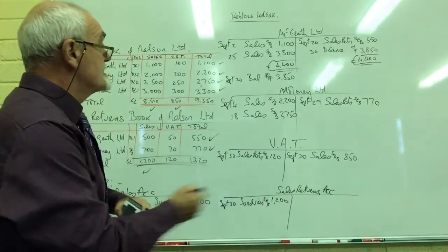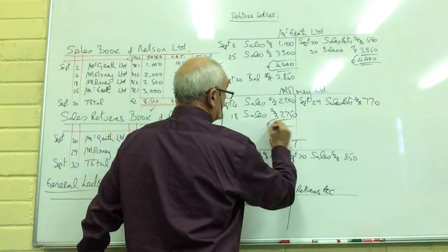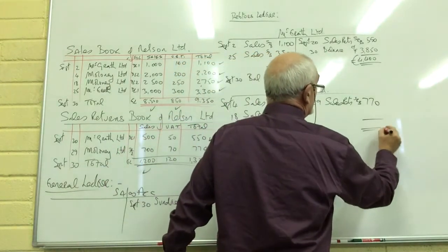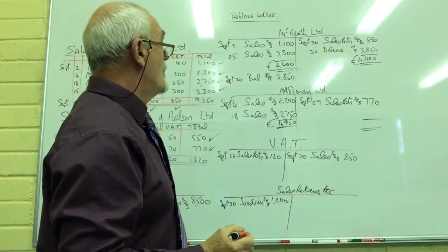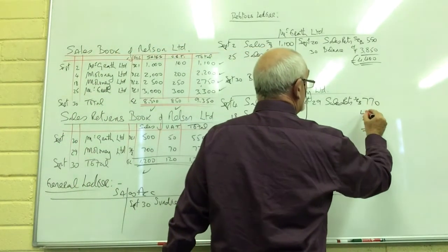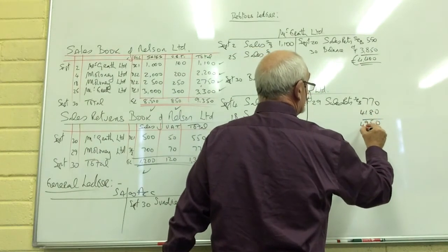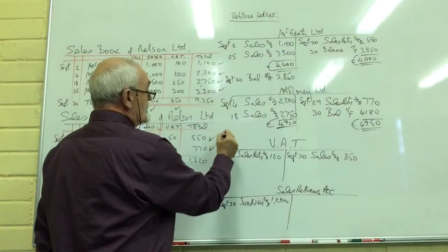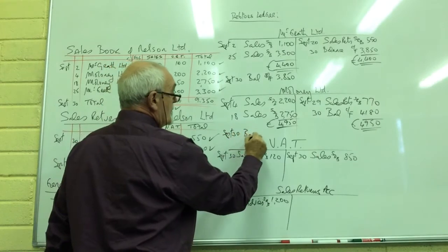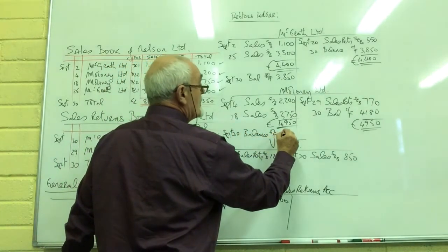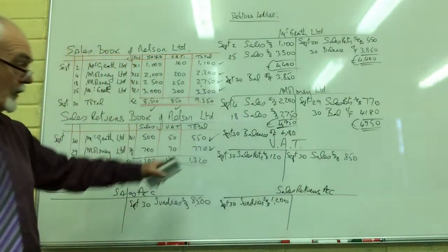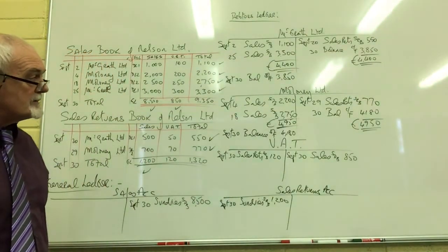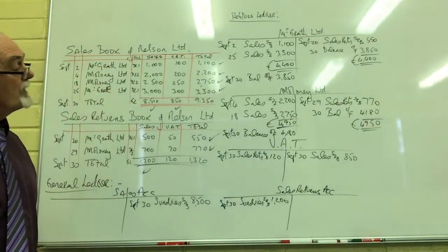In Maloney's case, the debit side totals £4,950 and the balance must be £4,180. So September 30th, balance carried forward £4,180, and bringing the balance forward, Maloney owes us £4,180. So McGrath's balance is £3,850 — a debit balance — and Maloney owes us £4,180 — also a debit balance.